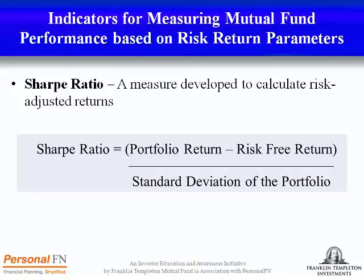The indicators for measuring mutual fund performance based on risk-return parameters are: first, the Sharpe ratio — a measure developed to calculate risk-adjusted returns. The Sharpe ratio measures how much return you can expect over and above a certain risk-free rate (for example, the bank deposit rate) for every unit of risk, measured by standard deviation of the scheme. Statistically, it is the difference between the annualized return and the risk-free return, divided by the standard deviation during a specified period. A higher Sharpe ratio indicates higher performance — so if two schemes have delivered similar returns, choose the one with the higher Sharpe ratio.